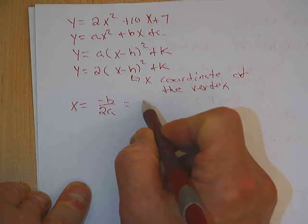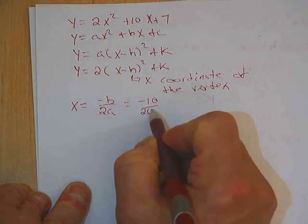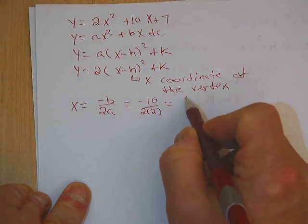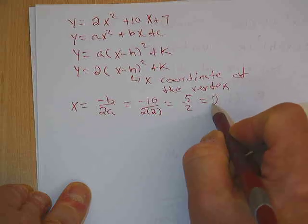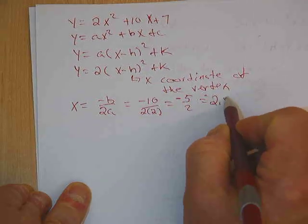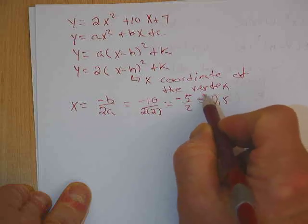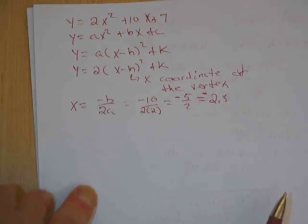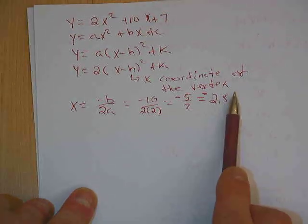So the opposite of b over 2a is going to be the opposite of 10 over 2 times 2, which is 5 halves or negative 5 halves or negative 2.5 if you will. Decimals okay because it ends.